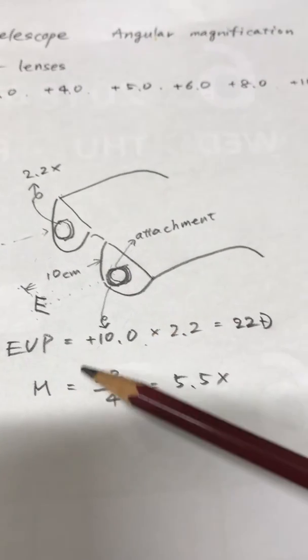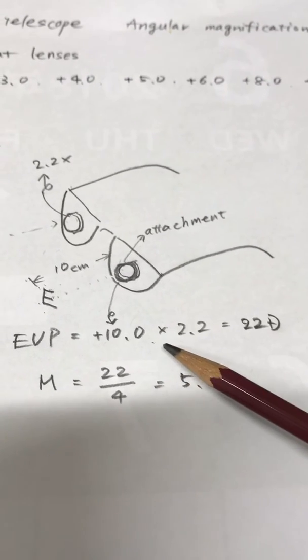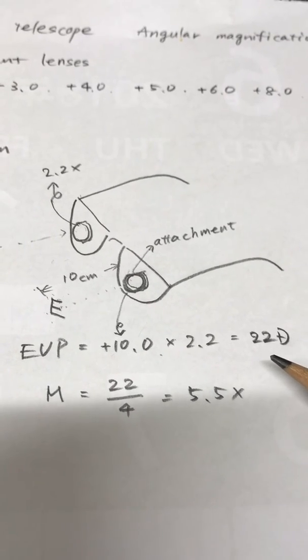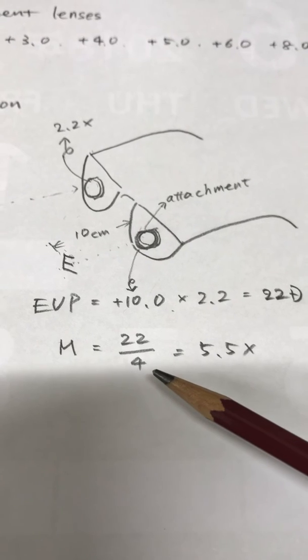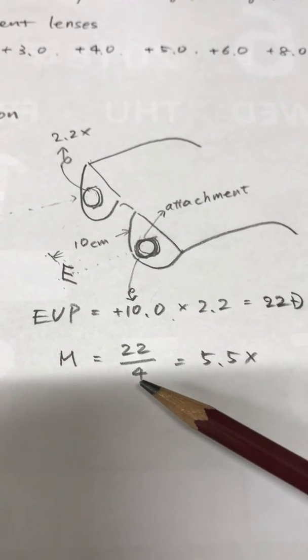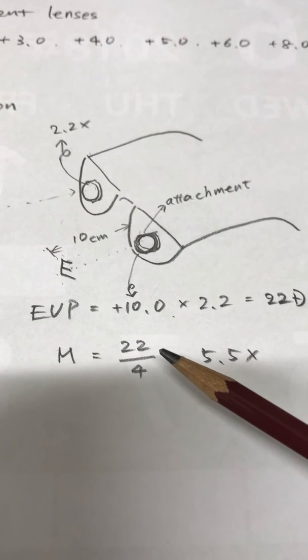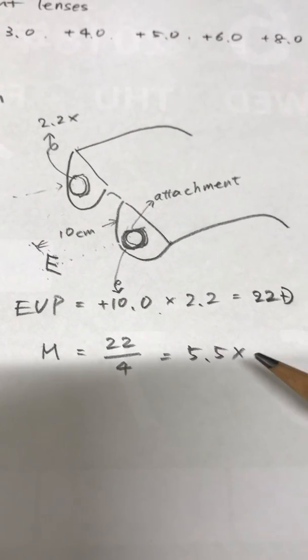The equivalent viewing power equals 10 diopters multiplied by 2.2, which equals 22 diopters. And the relative distance magnification equals 22 diopters divided by 4, which equals 5.5 times.